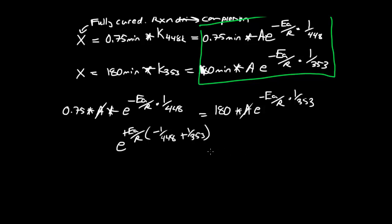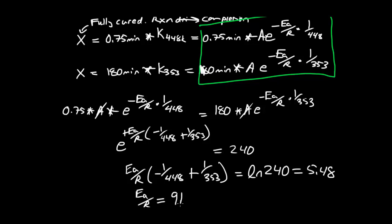We have Ea over 448 minus 1 over 353 equals ln natural log of 240, which is equal to 5.48. And if you solve for Ea over R, we find that it's equal to 9118.